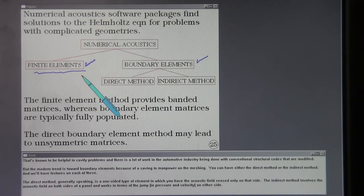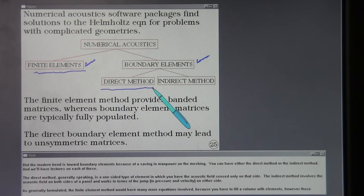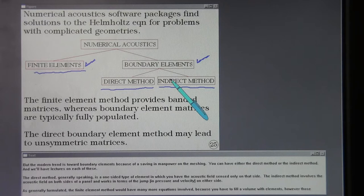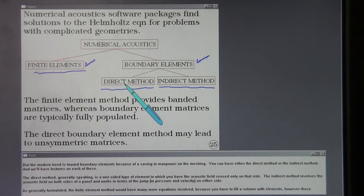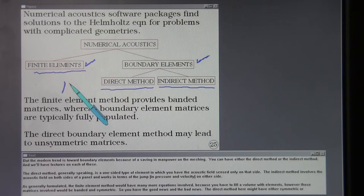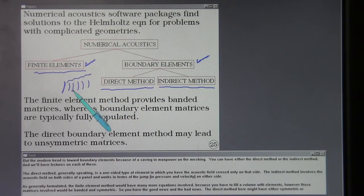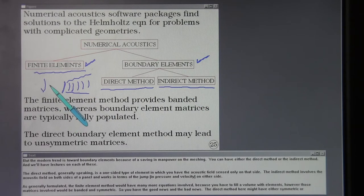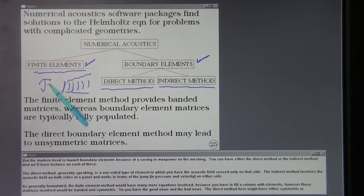But the modern trend is toward boundary elements because of a saving in manpower on the meshing. You can have either the direct method or the indirect method. And we'll have lectures on each of these. The direct method, generally speaking, is a one-sided type of element in which you have the acoustic field sensed only on that side. The indirect method involves the acoustic field on both sides of a panel and works in terms of the jump on either side.